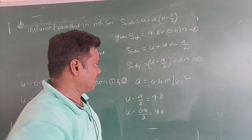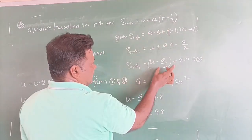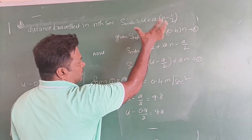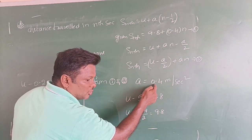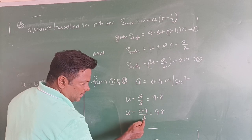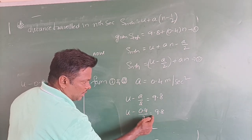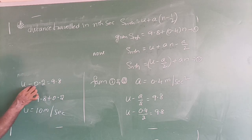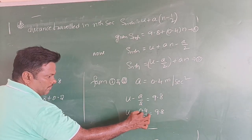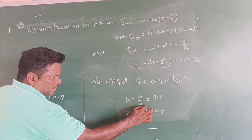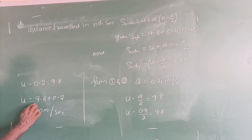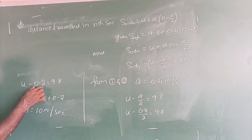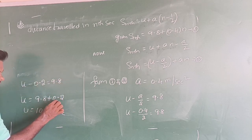Now we need to find velocity. The constant term gives us U − A/2 = 9.8. We know A = 0.4, so U − 0.4/2 = 9.8, which is U − 0.2 = 9.8. Therefore U = 9.8 + 0.2, giving initial velocity U = 10 m/s.